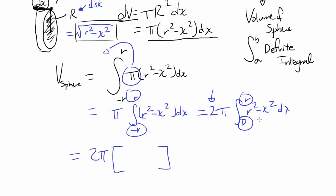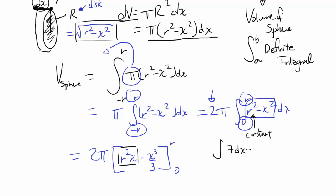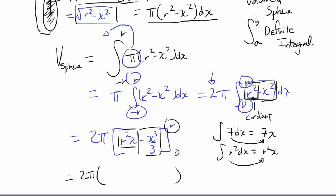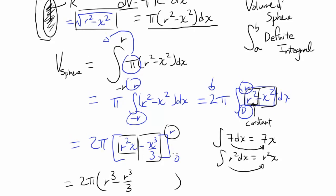Now we evaluate: 2π times the antiderivative of (r² − x²), which is r²x − x³/3, evaluated from 0 to r. Note that r² is a constant, so integrating r² gives r²x. Plugging in r: r³ − r³/3 = 2r³/3. Plugging in 0 gives zero. So V = 2π · (2r³/3) = 4/3 π r³. That's our final answer.